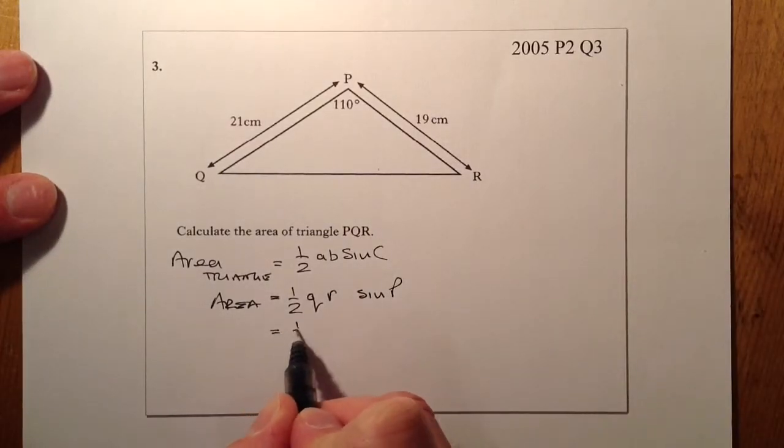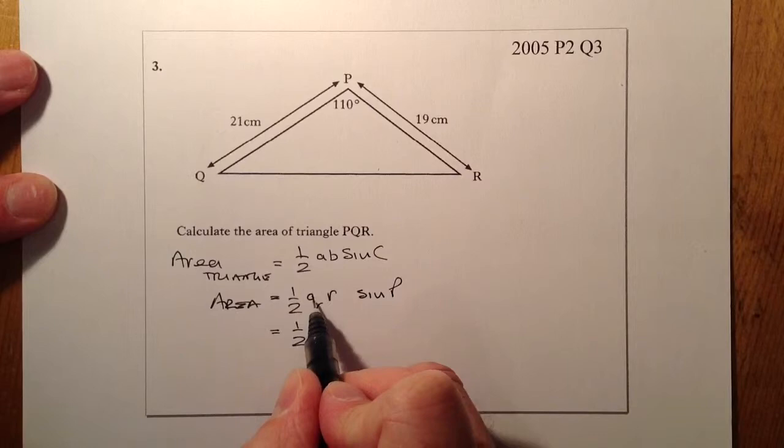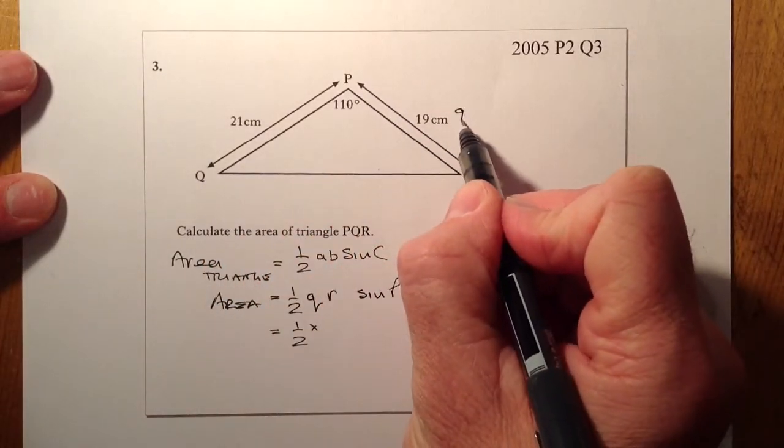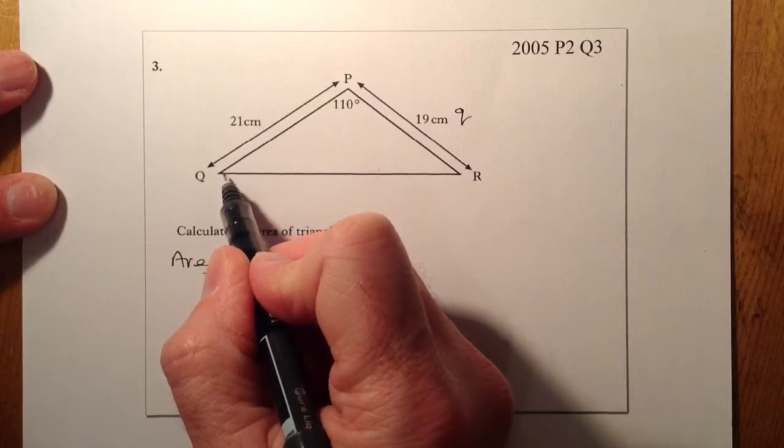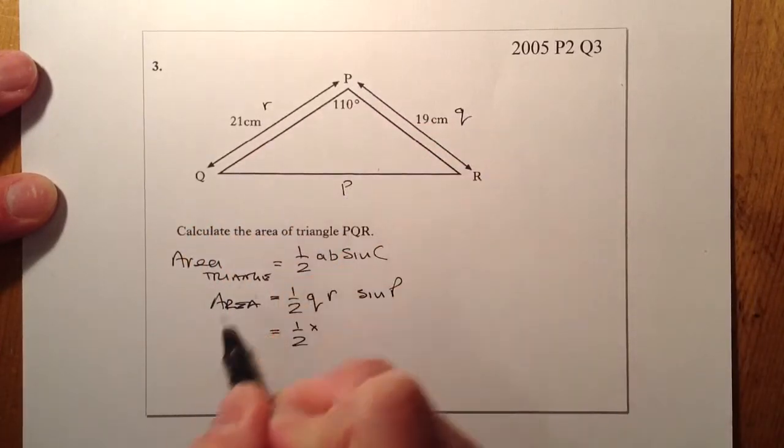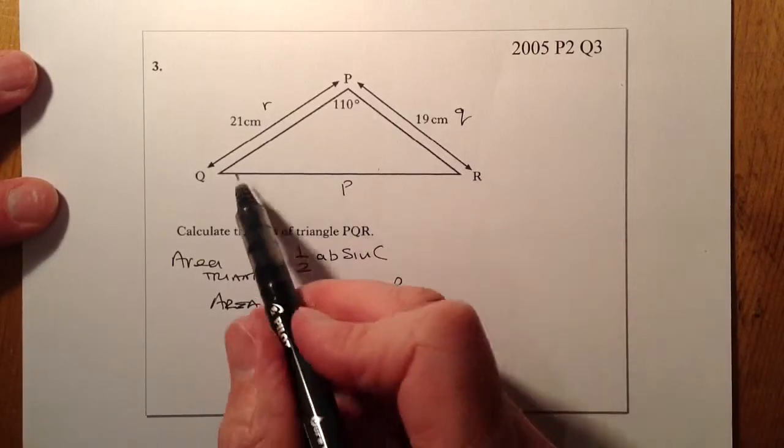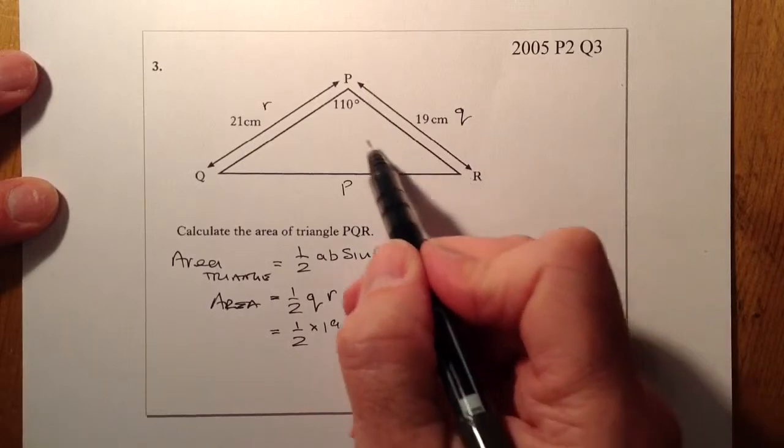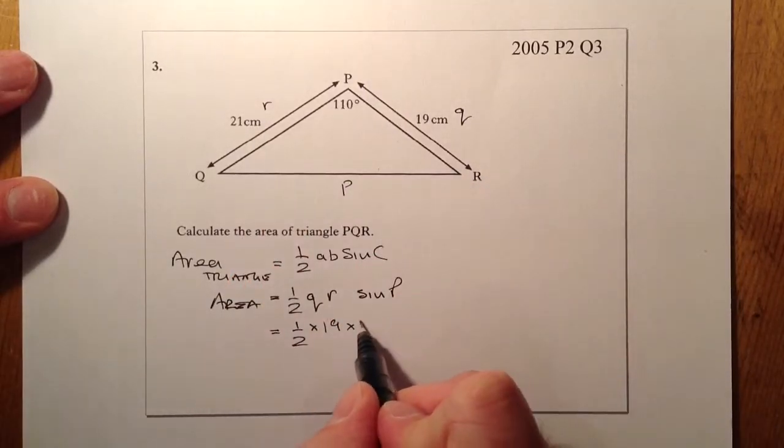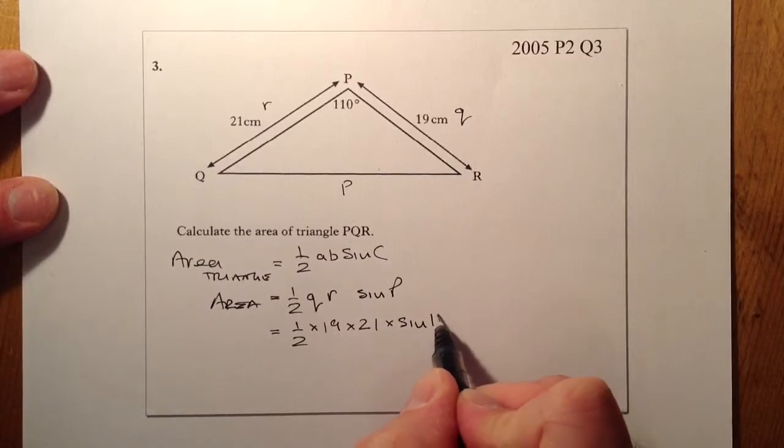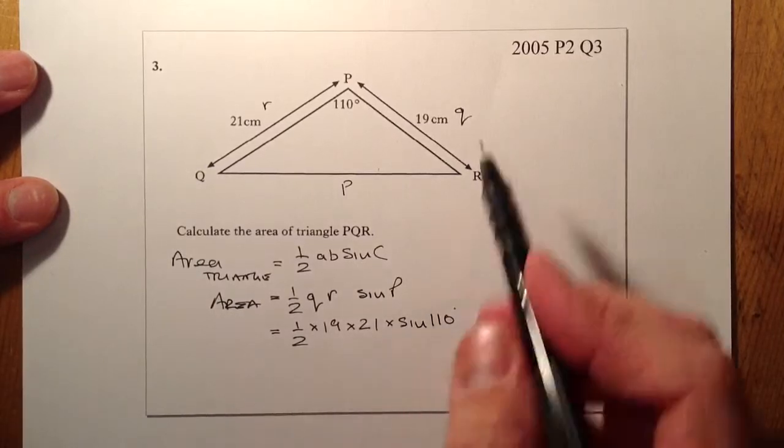So let's put our values in and work through this question. I'll look for Q. So remember, across from the angle or the vertices, we'll put a small letter. Right, so the Q is going to be 19, R is going to be across from here which is 21, and then I'll multiply that by the sine of 110 degrees.